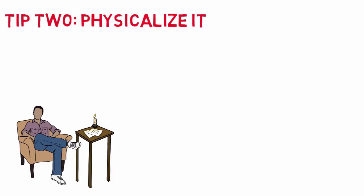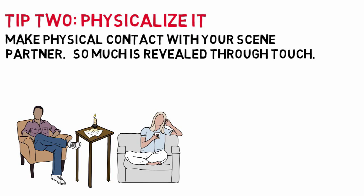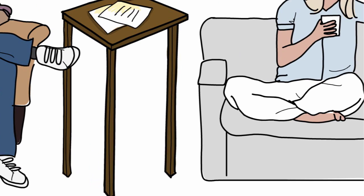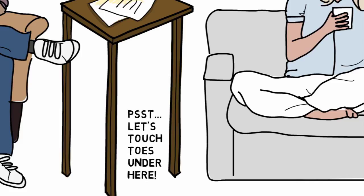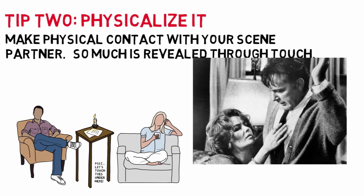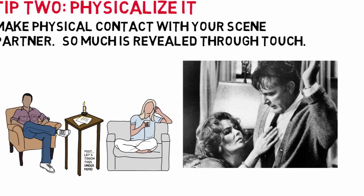One way to explore this is to make physical contact with your scene partner. So much is revealed through touch. You can increase the challenge by finding ways of making contact without your hands, even if it's out of frame — meaning no one will see it, but it will inform the relationship. In other words, touching toes under the table can spark a sparkle in the eyes. Watch Richard Burton, Elizabeth Taylor, and Mike Nichols' film Who's Afraid of Virginia Woolf on mute — you'll see every nuance of their relationship.